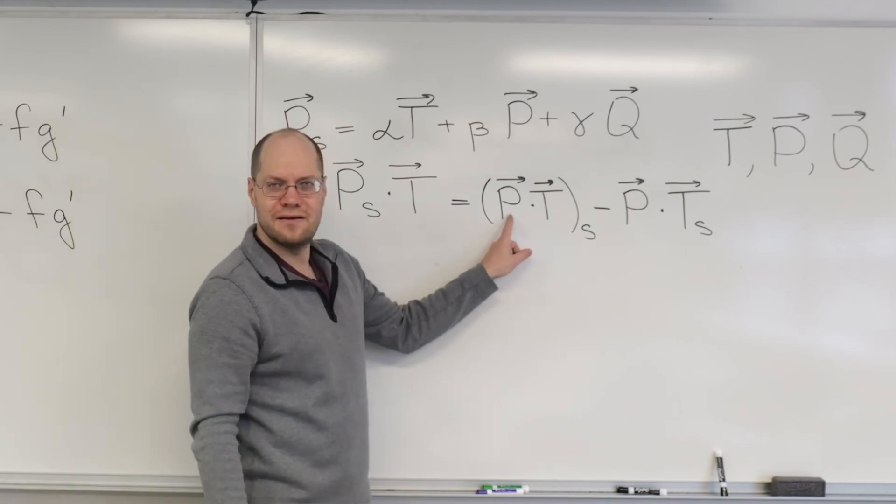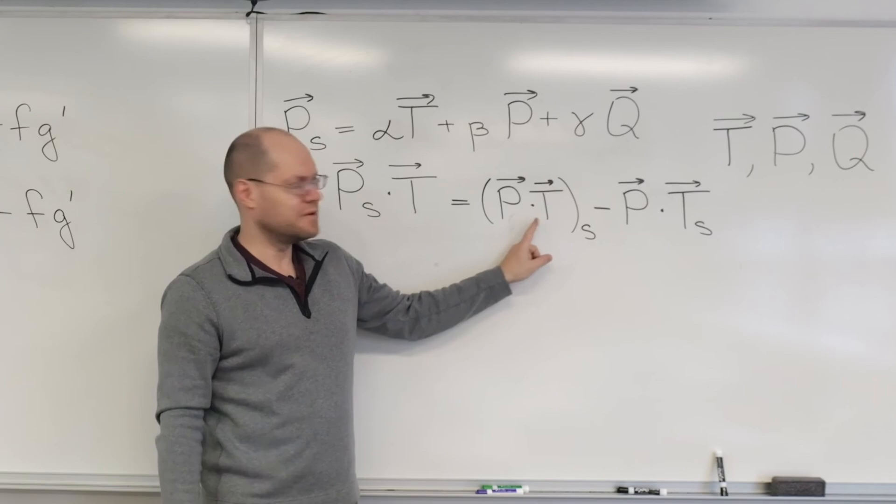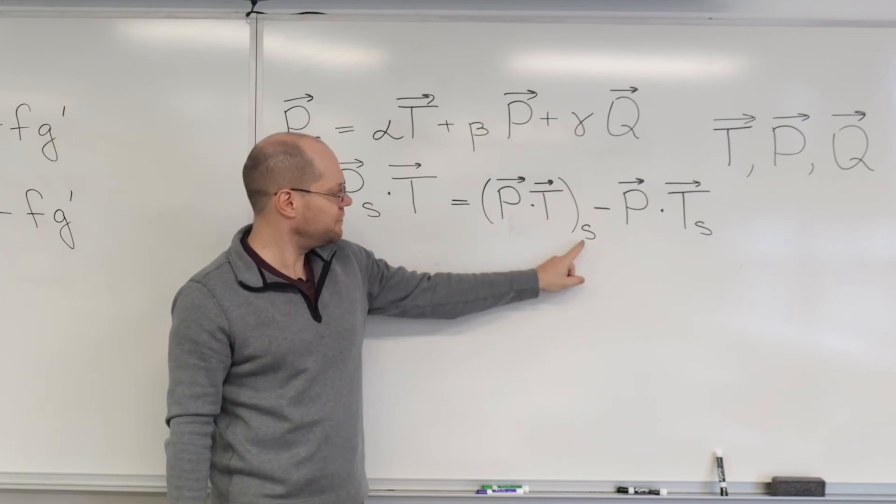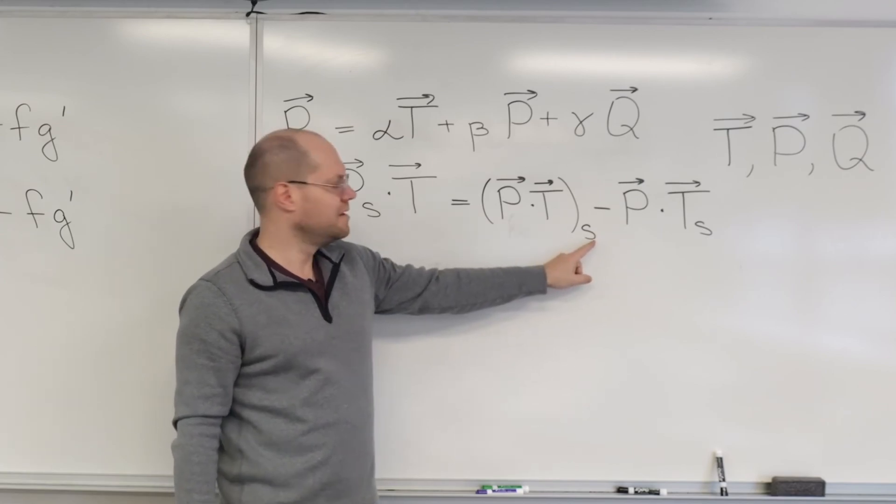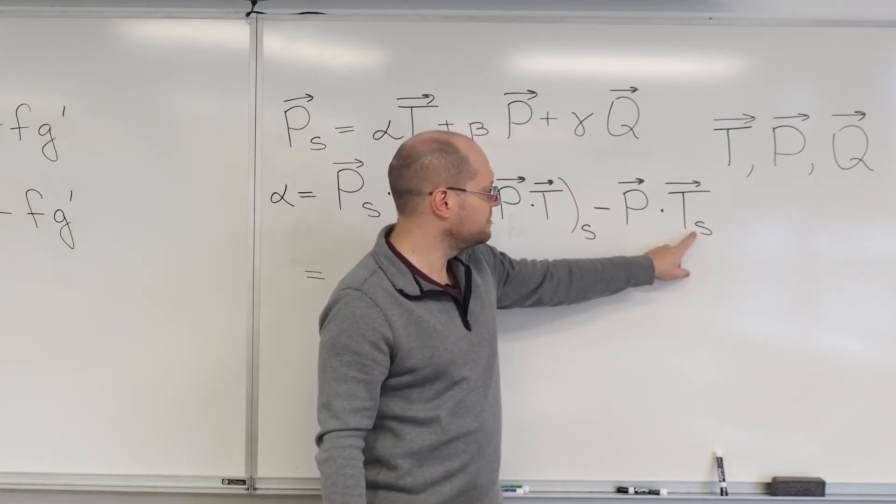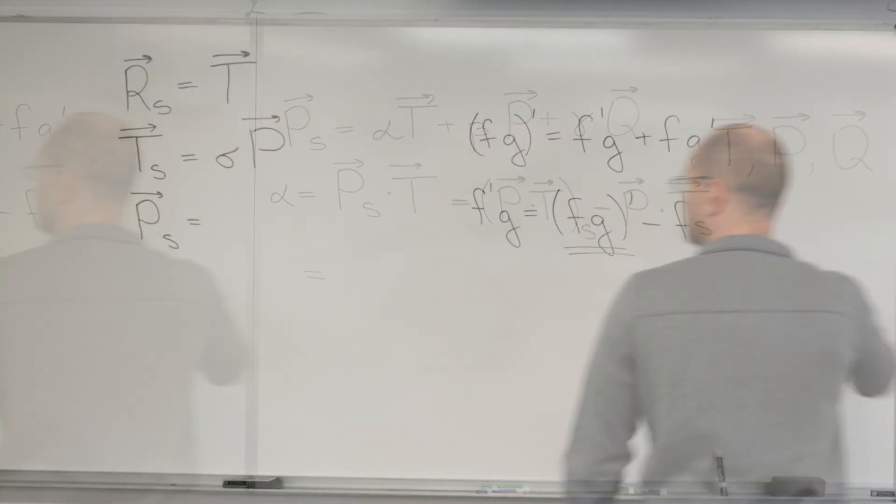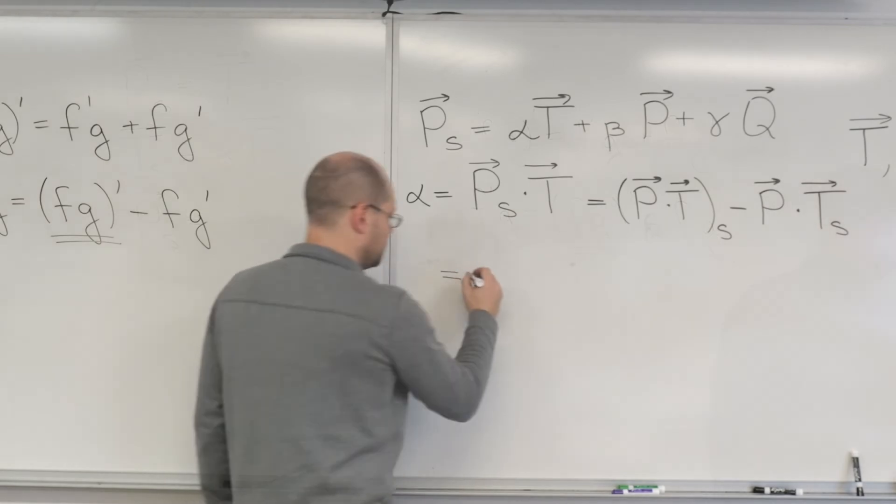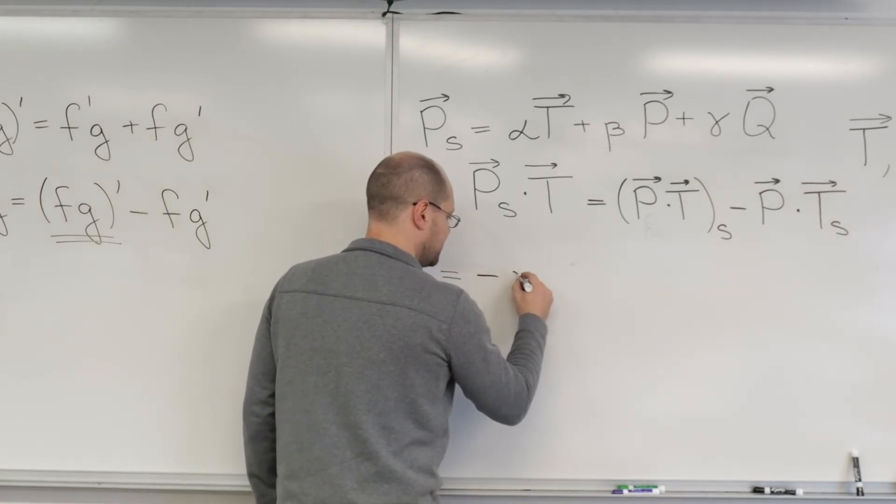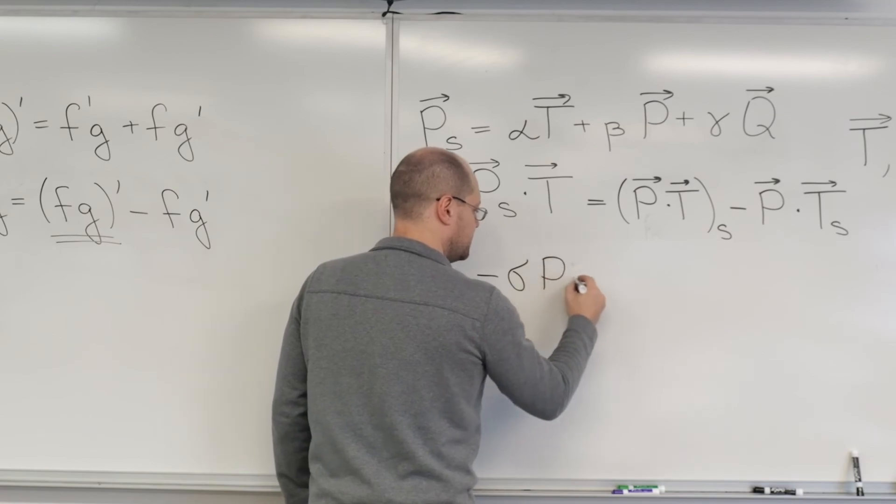Well, we know that P is orthogonal to T at every point. So this is identically zero for every value of S. So this term is zero. And T sub S, the derivative of the unit tangent with respect to the arc length, is right here. Right? It's the curvature normal. In other words, it's the curvature times the principal normal. So we write this as minus sigma P dotted with P.